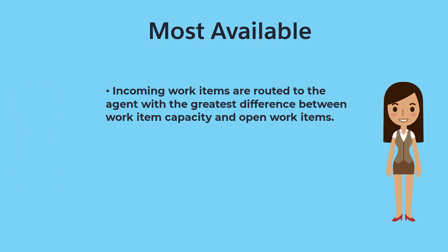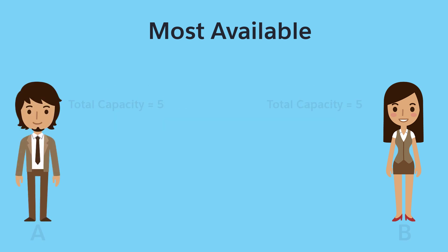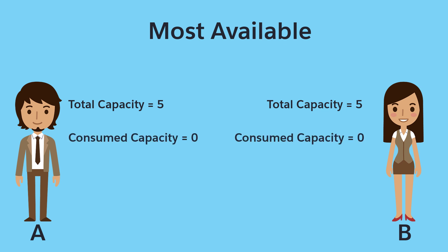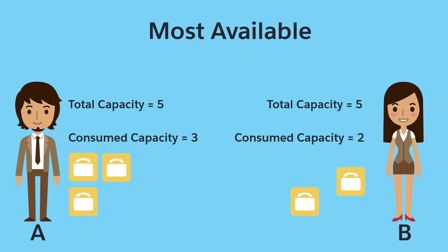Let's look at an example of this scenario with our two agents. Like before, Agent A and Agent B each have an overall capacity of 5. Agent A has three active work items, while Agent B has one. Because Agent B has the most open capacity, incoming work items are routed to Agent B. Notice that in this scenario, capacity weight is not considered.